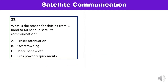Question 23: What is the reason for shifting from C band to KU band in satellite communication? The reason is overcrowding — many communication satellites are now in orbit, most of them in the C band, so it has shifted toward the KU band. Answer B is correct.